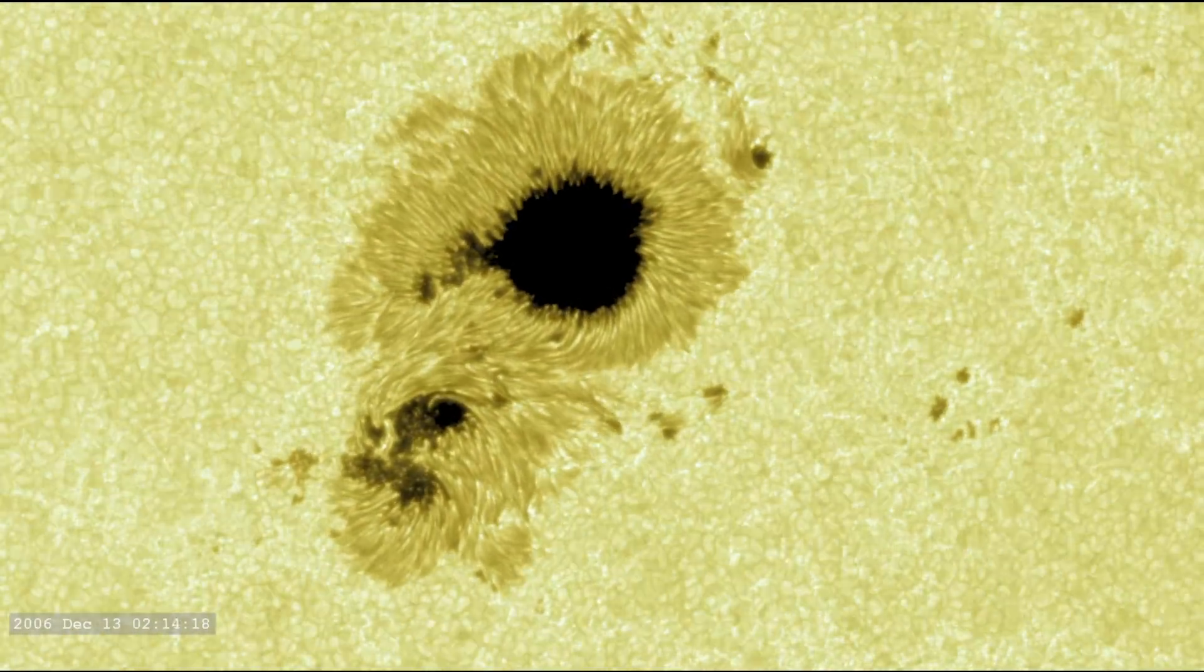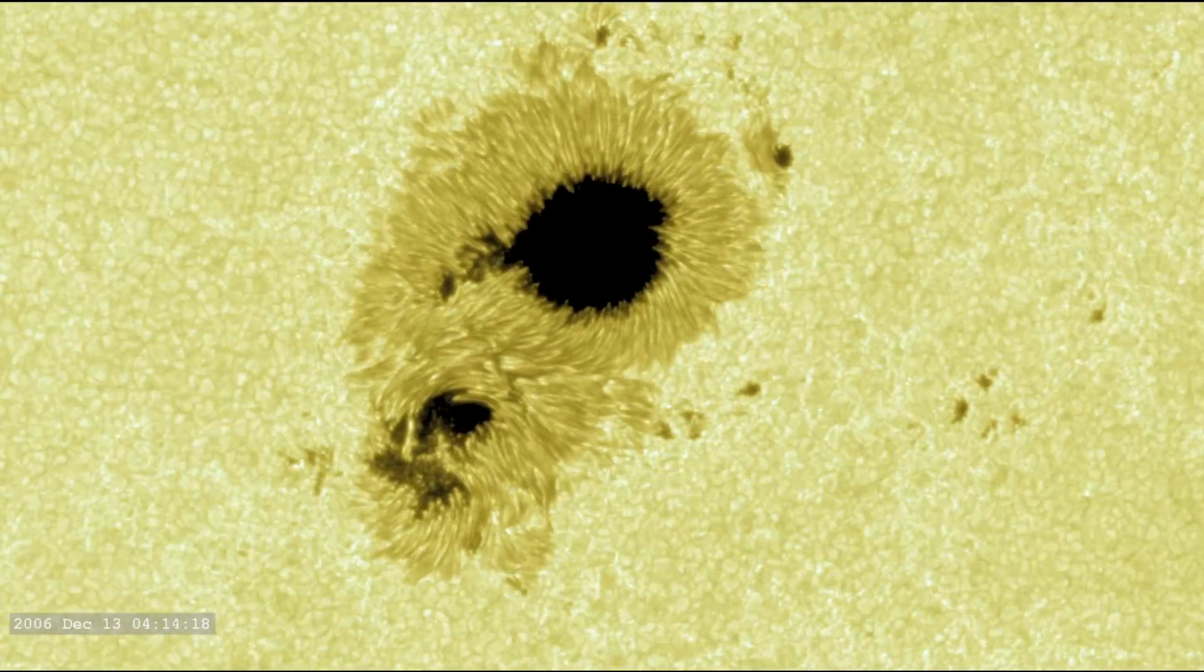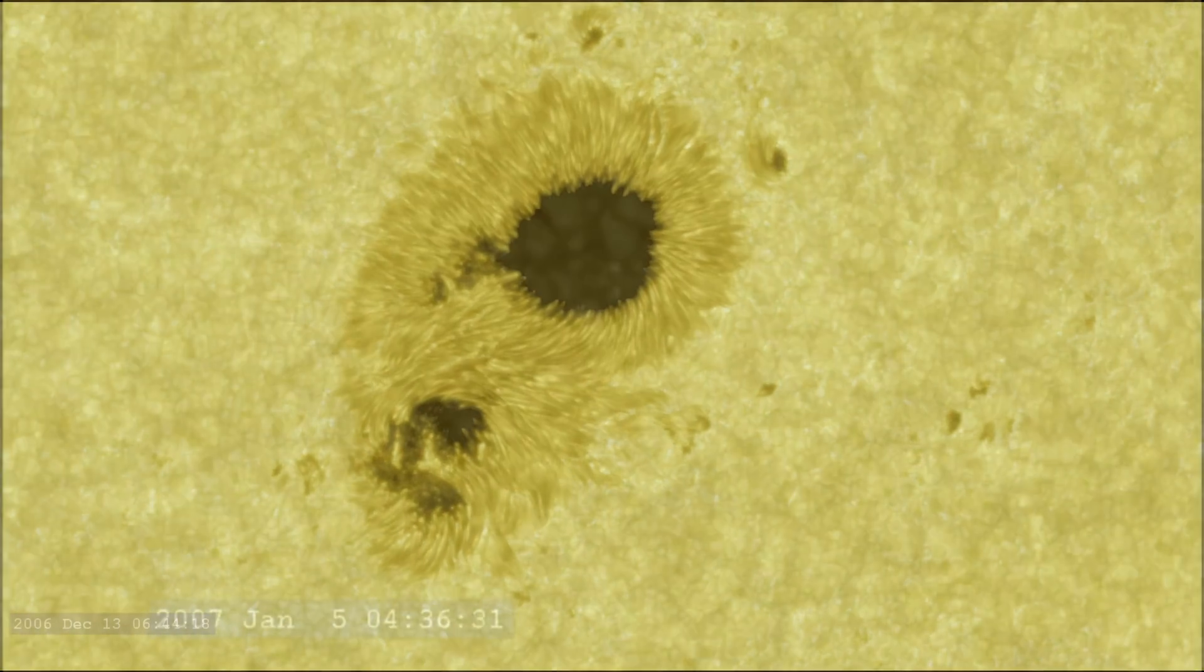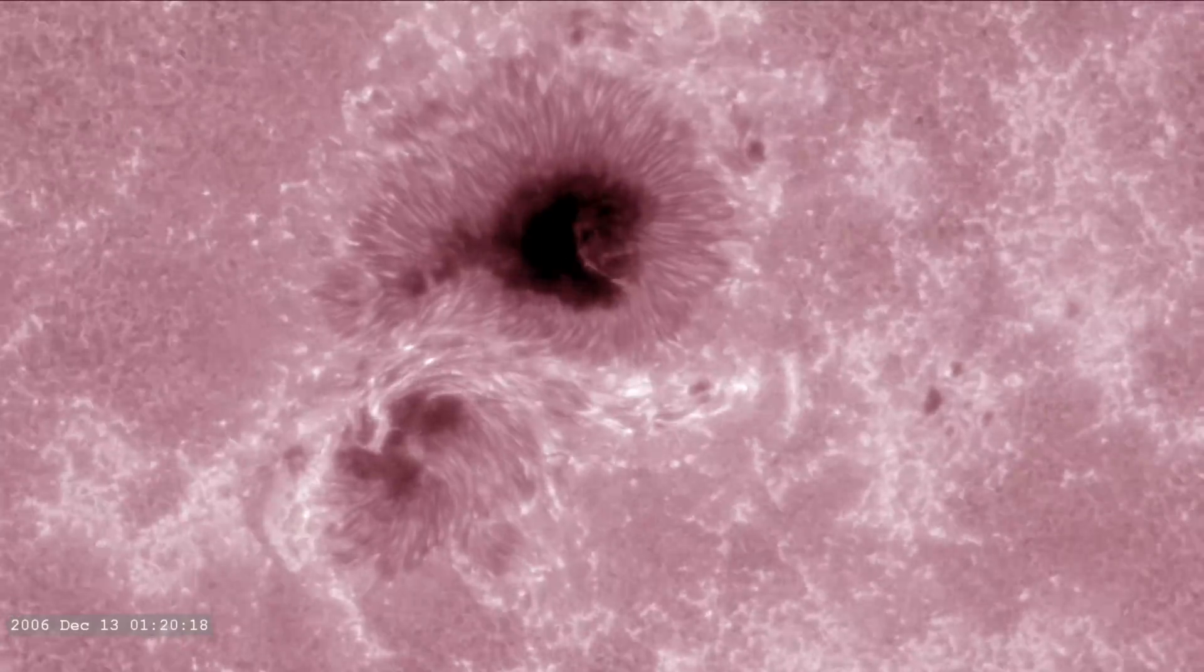We can see things on the sun that are about 70 kilometers in size right now, and we're building a new telescope that should be able to see things that are about 30 kilometers in size. And for the sun, that's really very small scale.